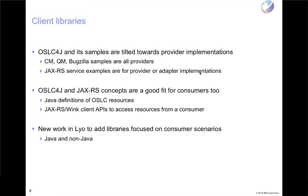OSLC4J and JAXRS in general are a good fit for consumers too. Providing the Java definitions of an OSLC resource is useful to a consumer — I want to be able to transform something into a Java change request, or a Java test plan or requirement. So the ability in OSLC4J to serialize and deserialize from Java to the wire format is still useful for consumers, as well as the JAXRS stuff. I need some sort of a JAXRS client to help me consume those services. That's where Apache Wink fits in on the client side.